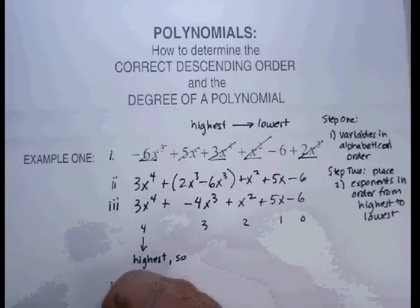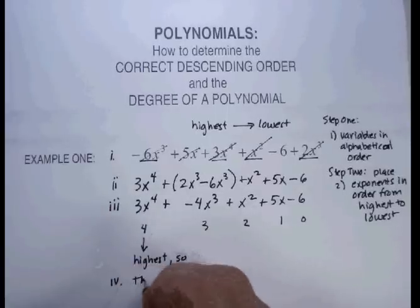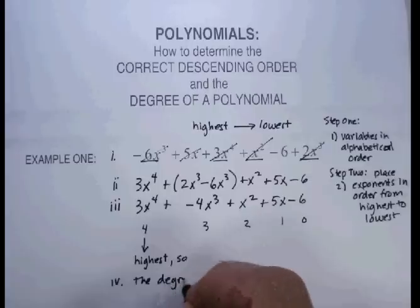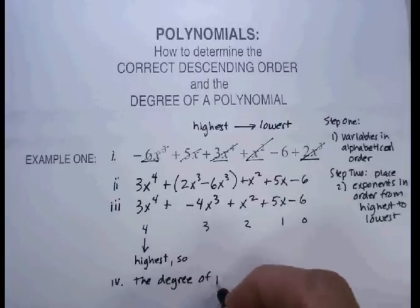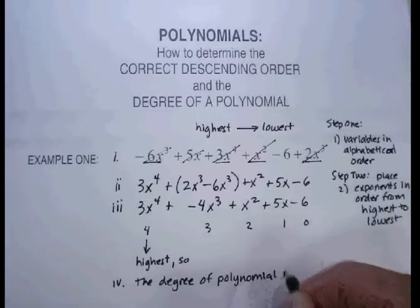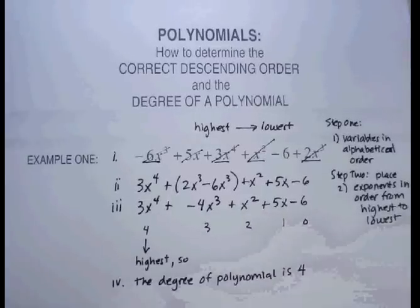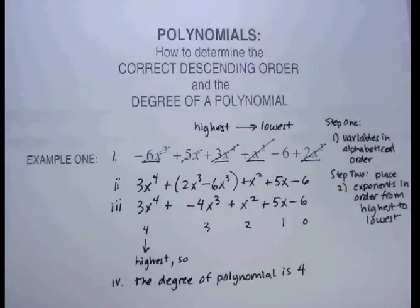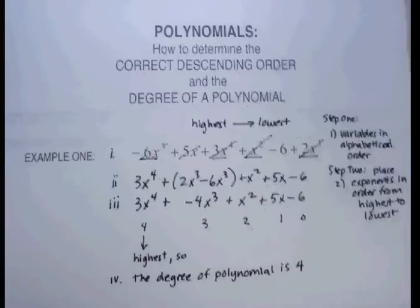So, step four, the degree of this whole polynomial is four. And that's how you determine the degree. Okay, now let's do something a little bit more complicated, because that one was fairly simple. Okay, let's look at the next problem.